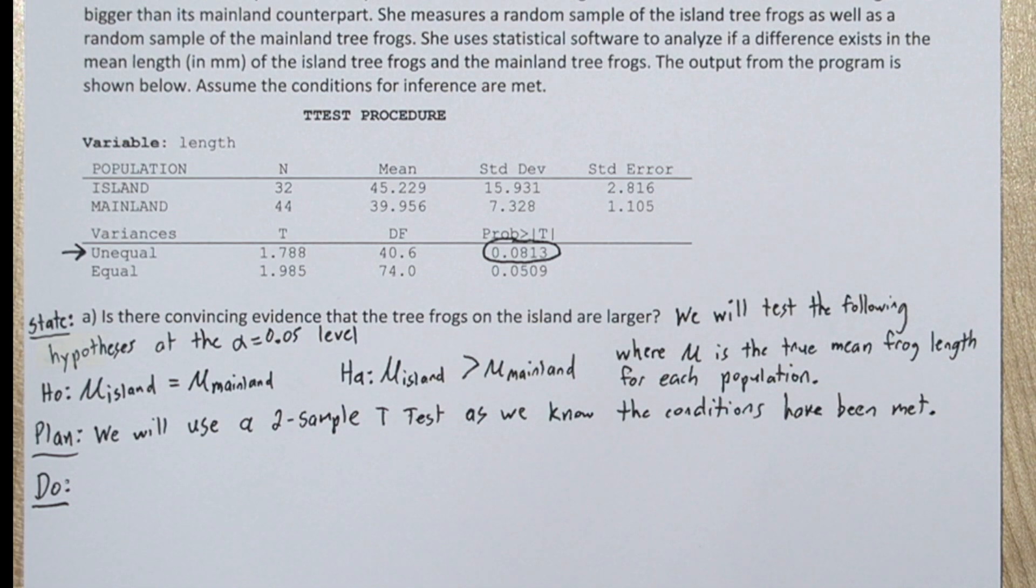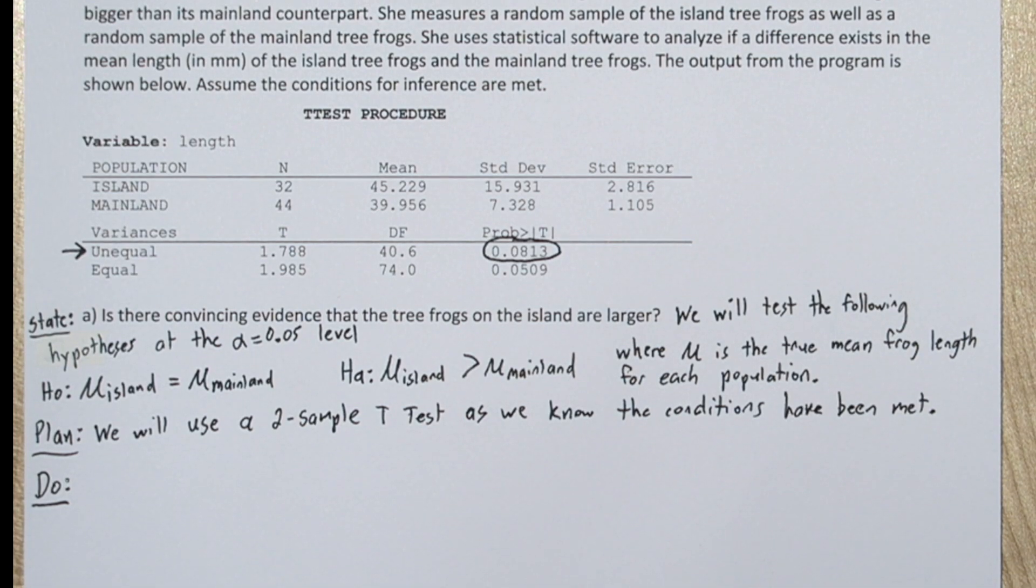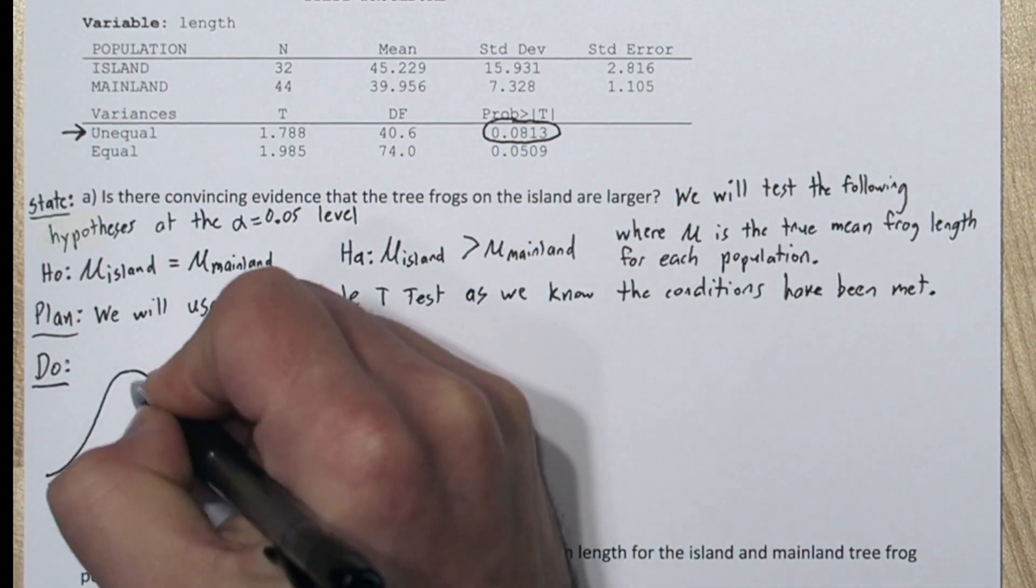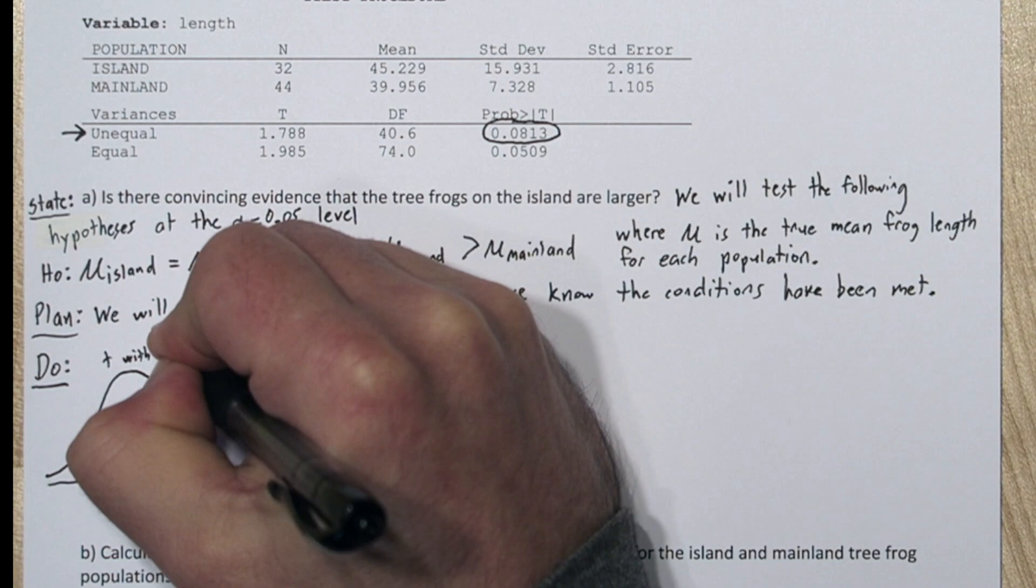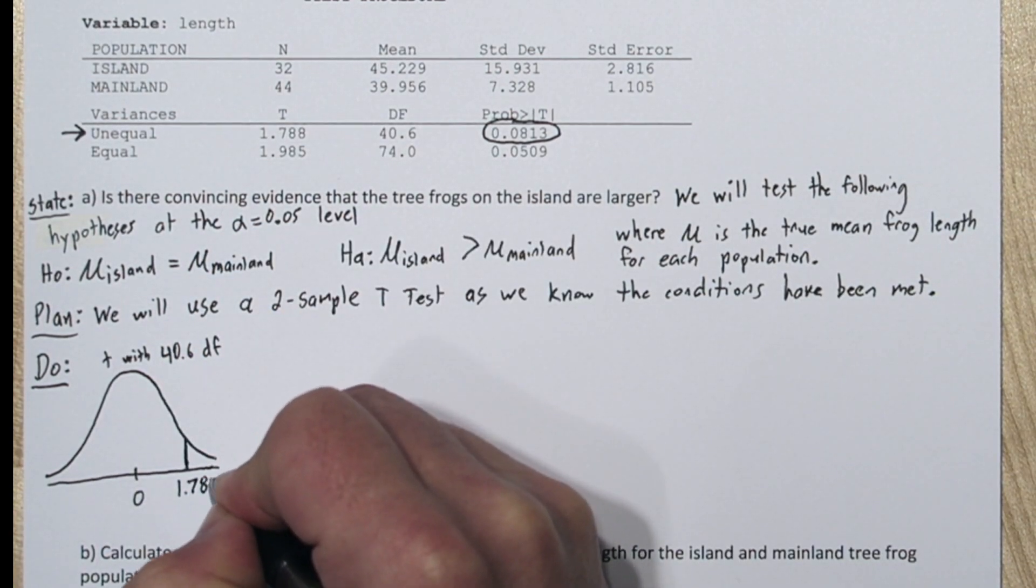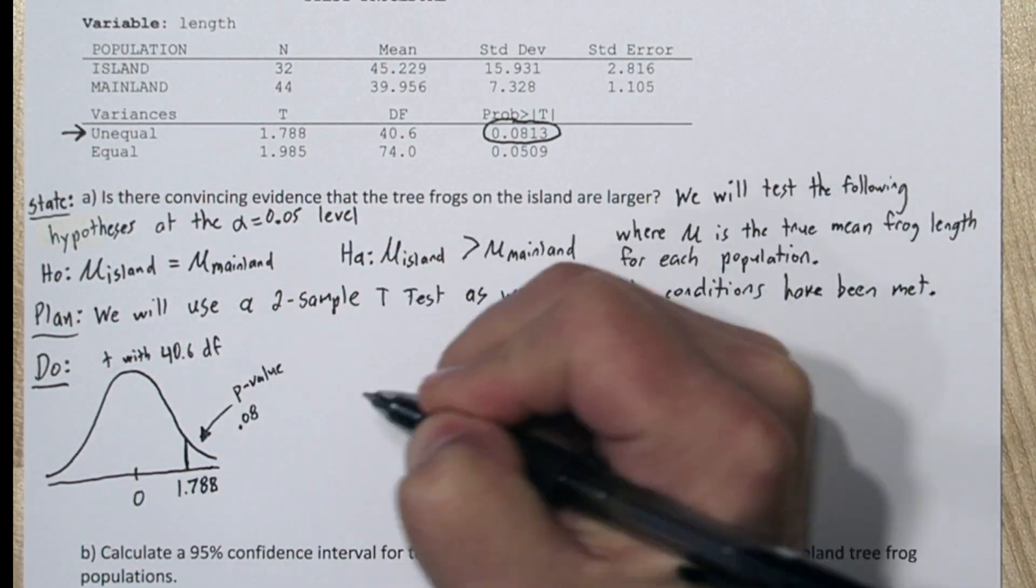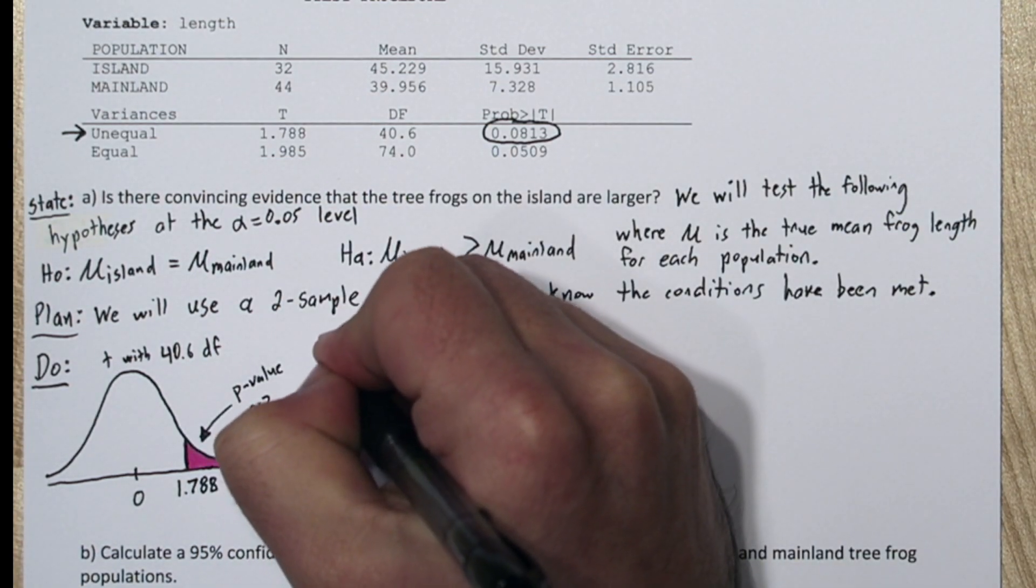And this is based on a t-distribution with 40.6 degrees of freedom. So let's draw that density curve. So our test statistic t is 1.78, that's probably about right here, and this area to the right is the p-value 0.0813.